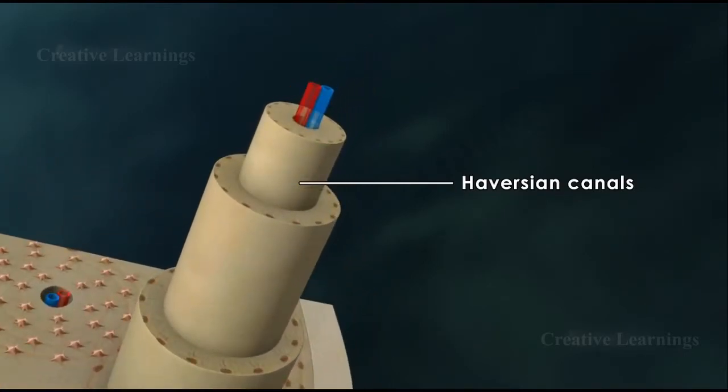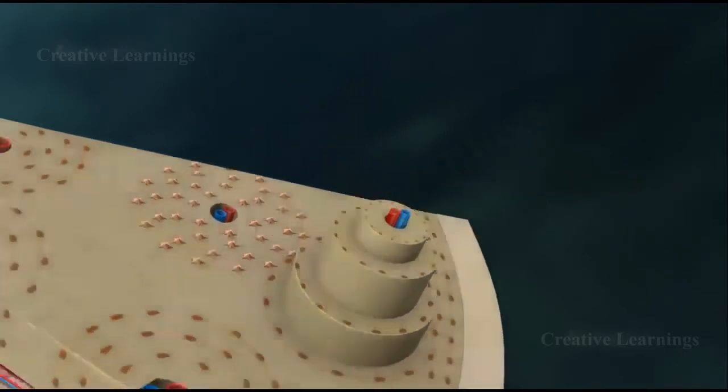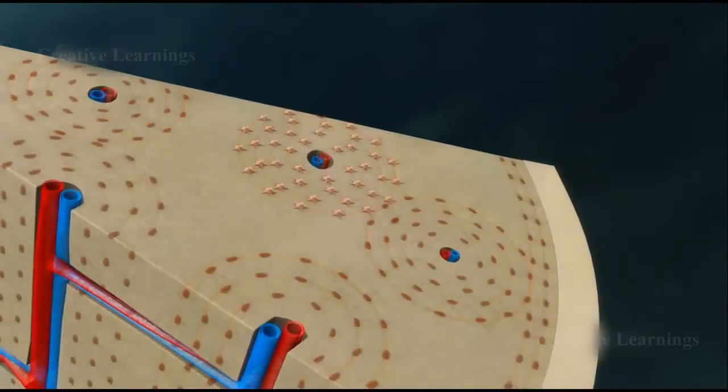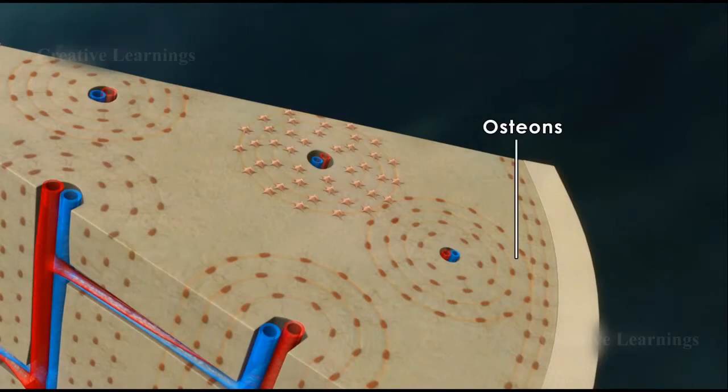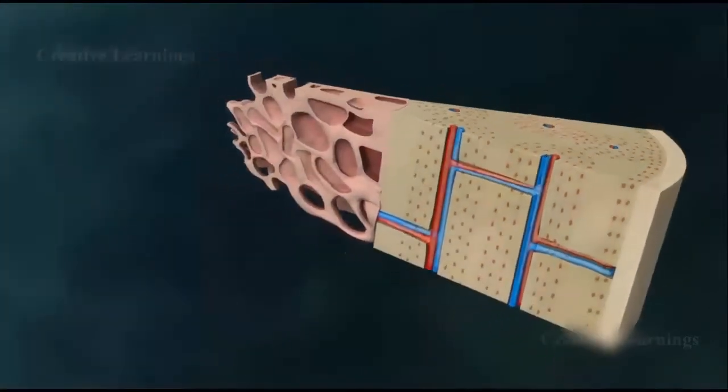The compact bone will surround the Haversian canals in layers known as osteons.